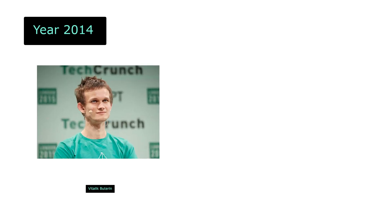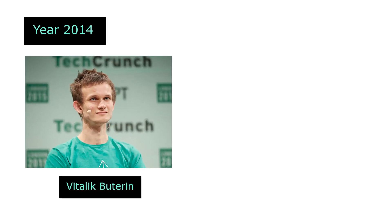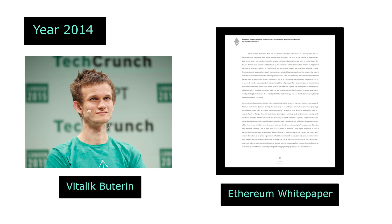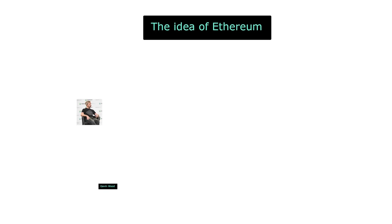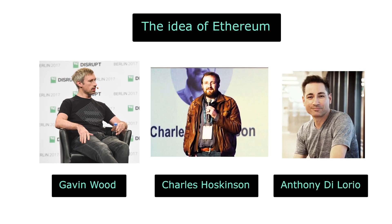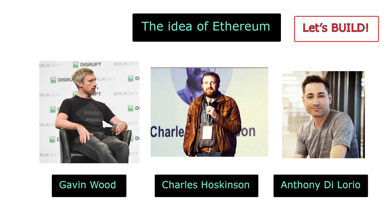In 2014, a young programmer by the name of Vitalik Buterin published the Ethereum white paper that described a way to build decentralized applications. His idea got the attention of a few scholars — Gavin Wood, Charles Hoskinson, and Anthony Delorio — who later became part of the long list of founders alongside Vitalik.